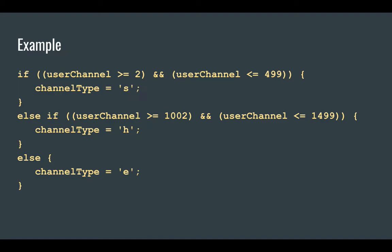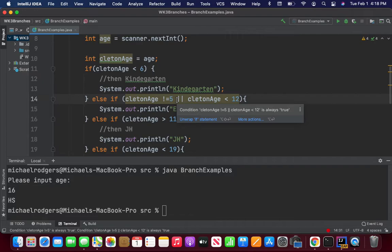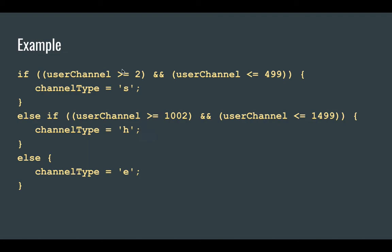Here's an example: if user channel is greater than or equal to 2 and less than or equal to 499, the channel type is 'S.' Else if the channel is greater than or equal to 1002 and less than 1499, that's another type. Otherwise the channel type is 'E.' It's actually better for readability to put parentheses around what you're trying to evaluate — when you're debugging later, it'll make a lot more sense.